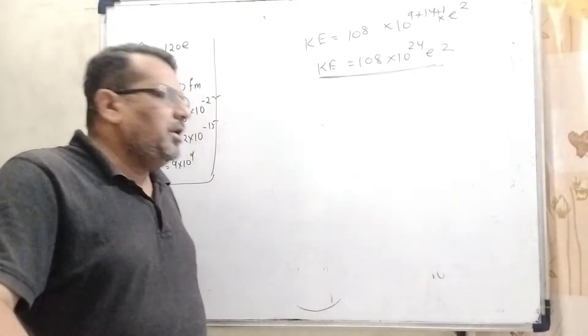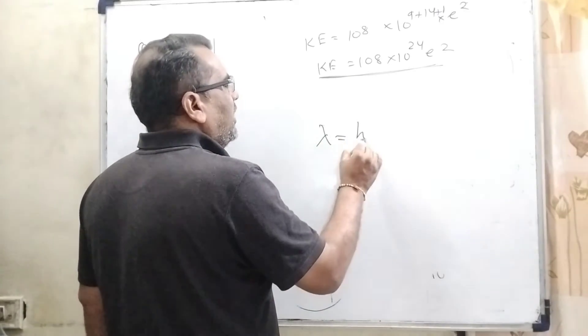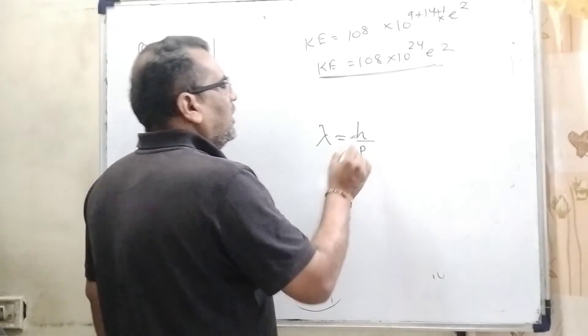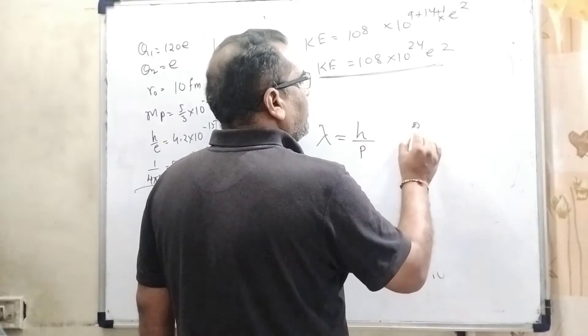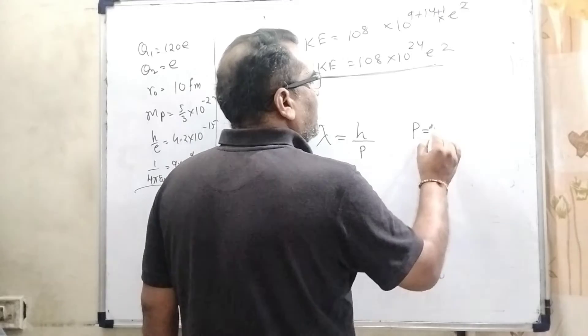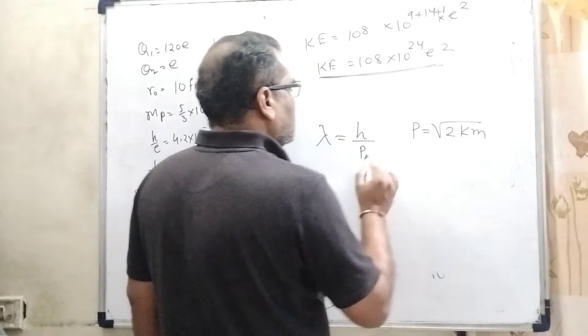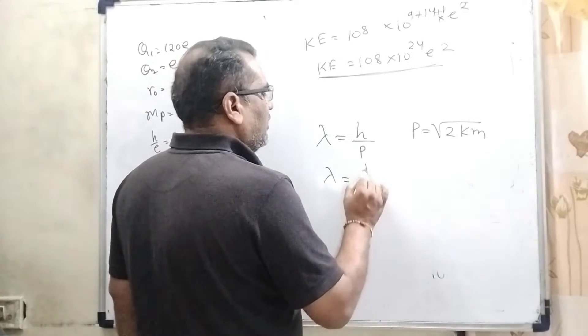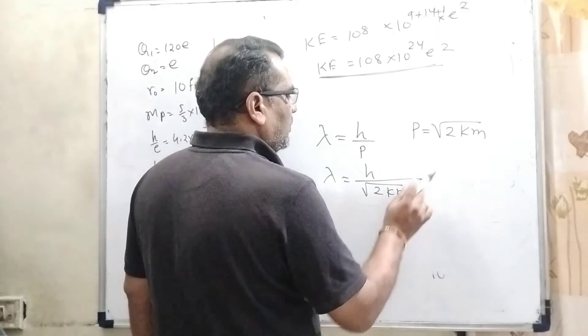Now from de Broglie wave equation, lambda equals h/p. Here h is Planck's constant and p is momentum. What is the relation between momentum and kinetic energy? p = √(2Km).